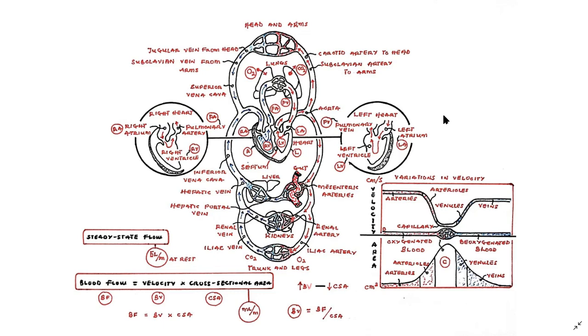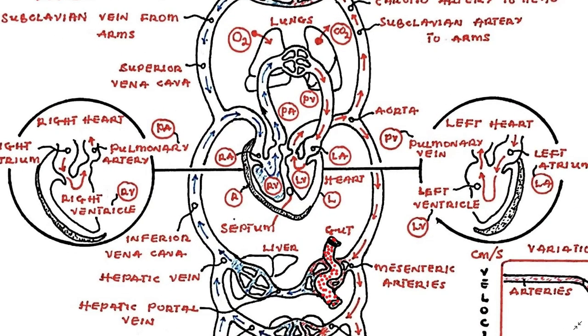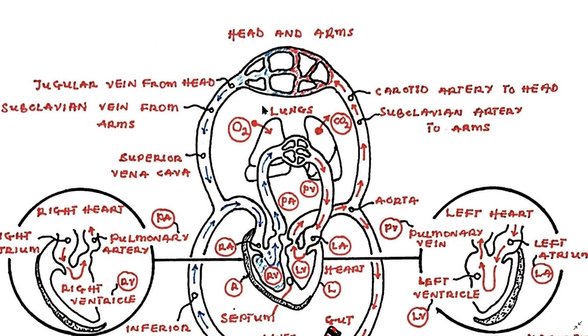Hi, in this video we are going to talk about how blood moves around in the body. The movement or circulation of blood in the body is performed by the cardiovascular system. The cardiovascular system, as the name implies,